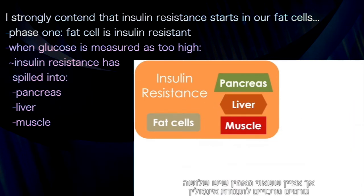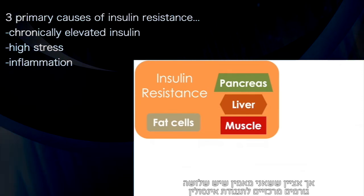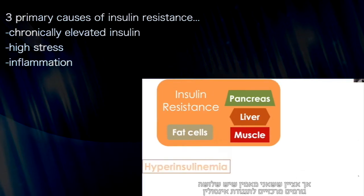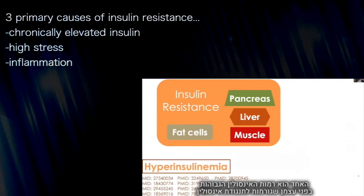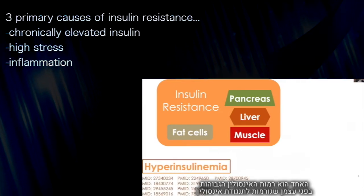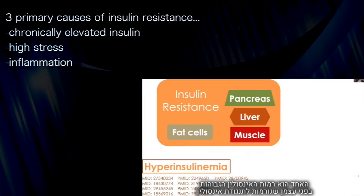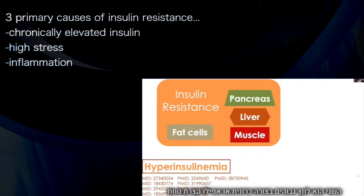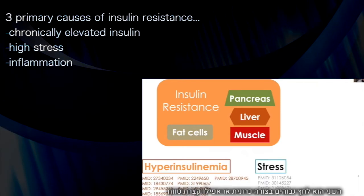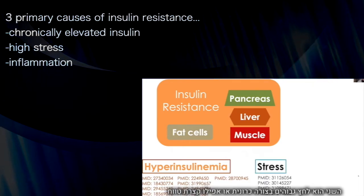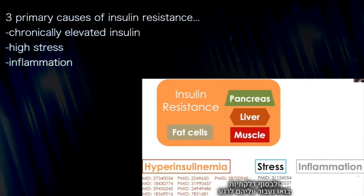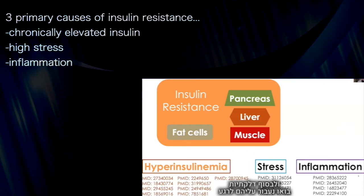I'll talk about the causes of insulin resistance. I believe there are three primary causes. One is chronically elevated insulin itself as a cause of insulin resistance. Second is stress — chronically elevated stress, or even acutely — and then acute or chronic inflammation.